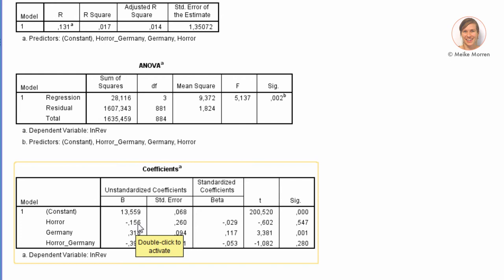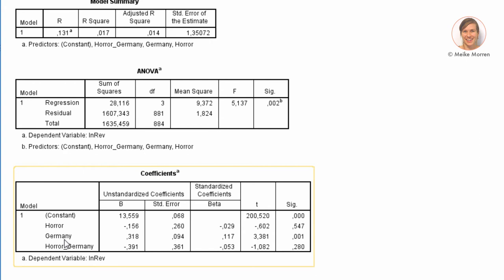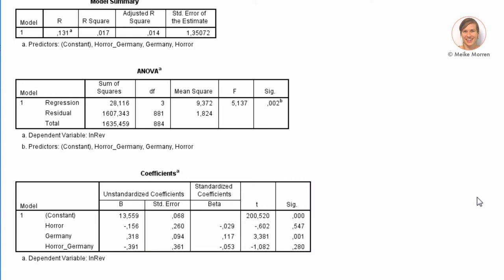Now we see that horror has a lower log revenue for both Germany and Italy, and Germany has a higher log revenue for both horror and action movies. The interaction effect between horror and Germany shows that a horror movie shown in Germany leads to a lower log revenue of 0.39. For a horror movie shown in Germany, the effect is: 13.55 (constant) + 1 × (−0.15 for horror) + 1.318 + (−0.391).